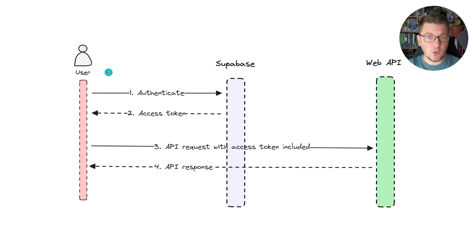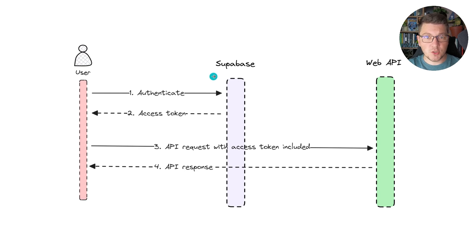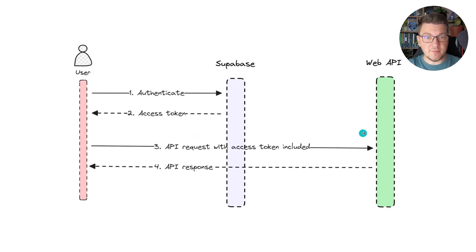This is what our authentication flow is going to look like when using Supabase. Our users are going to authenticate with Supabase directly, using either an email and password or some social authentication provider. Supabase will give the user an access token if they authenticate successfully. The user can then use this access token to send requests to our API, and if the user provides a valid access token, we are going to give them back an API response.